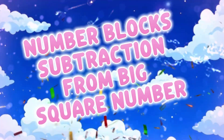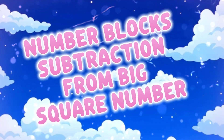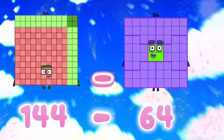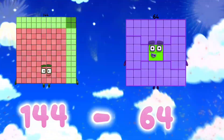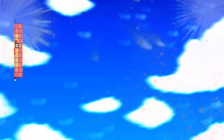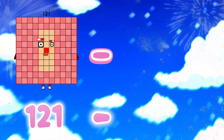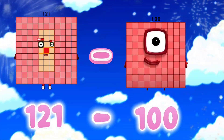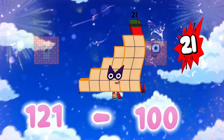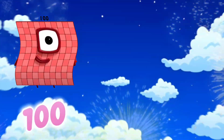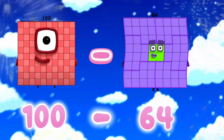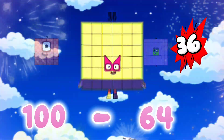Number blocks subtraction from big square numbers. Let's go. 144 minus 64 is equals to 80. 121 minus 100 is equals to 21. 100 minus 64 is equals to 36.